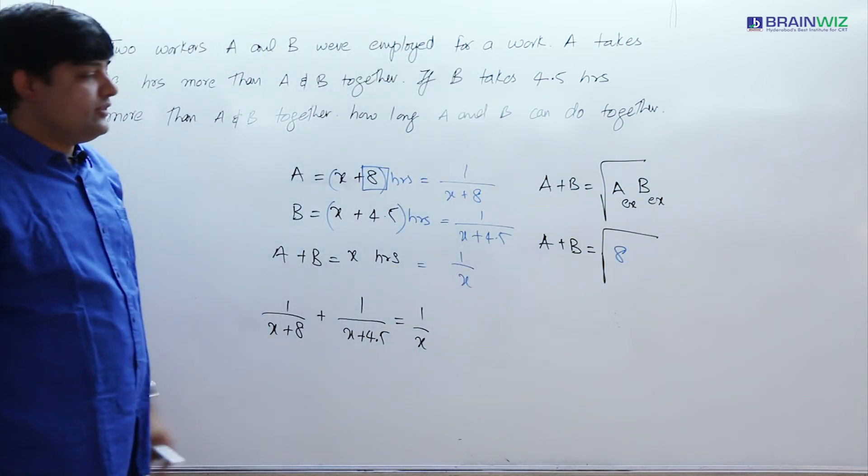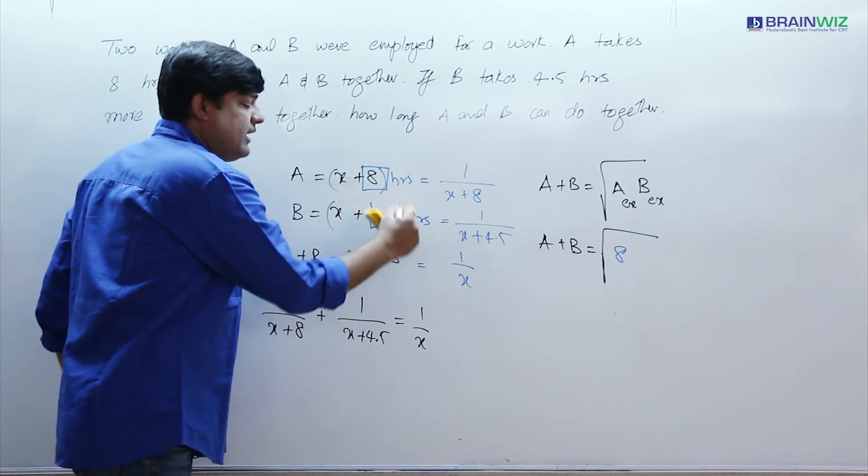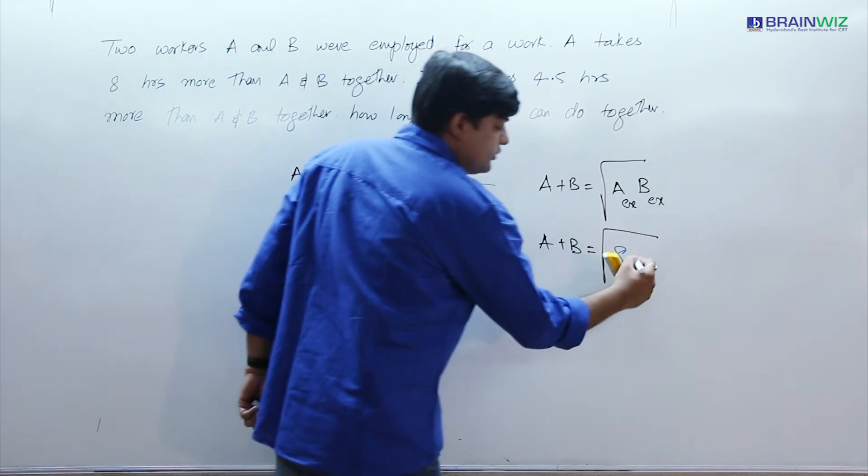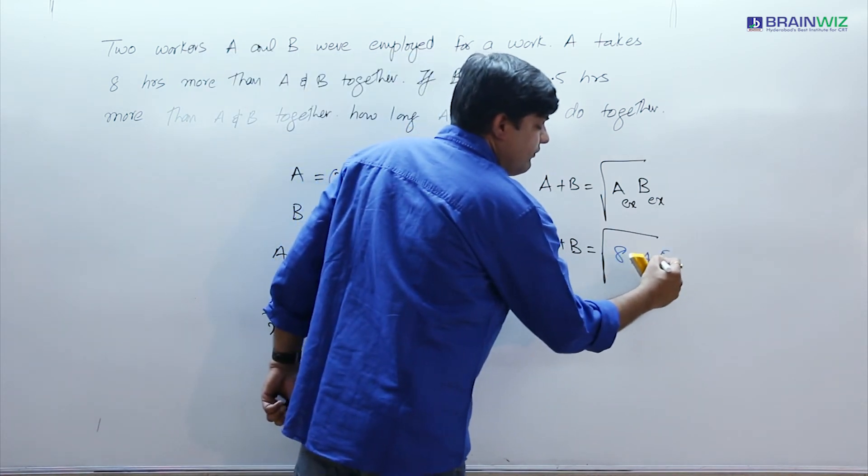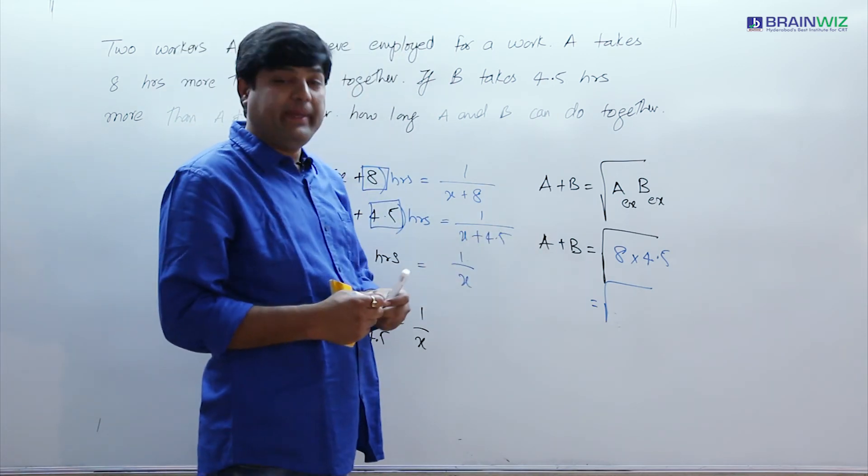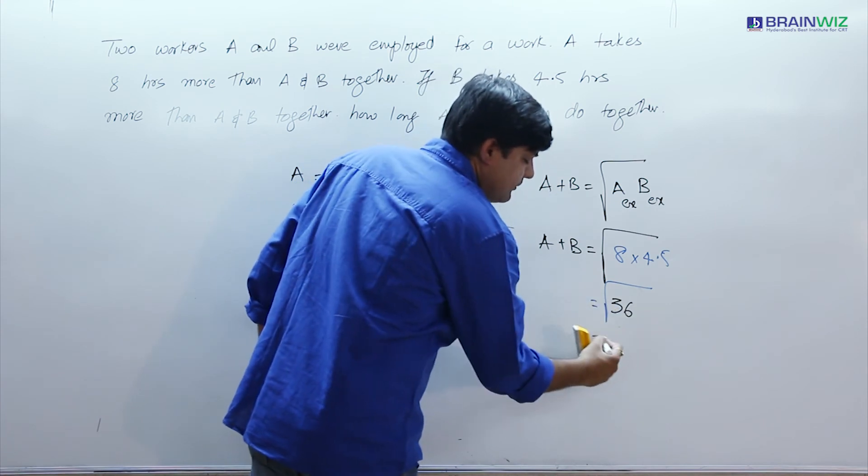And let us see how much B will take extra compared to A and B. So B will take 4.5 hours extra compared to A and B together. So I am multiplying here 4.5. So 8 into 4.5 makes 36. So under root 36 makes 6.